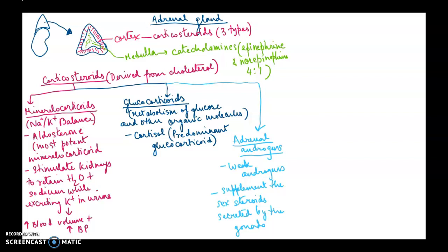We will focus on the cortex first and look at the different types of corticosteroids released from it. The cortex releases corticosteroids, and know that corticosteroids are derived from cholesterol. There are three types: the first one is mineralocorticoids, which play a major role in maintaining sodium-potassium balance. Aldosterone is the most notable mineralocorticoid.